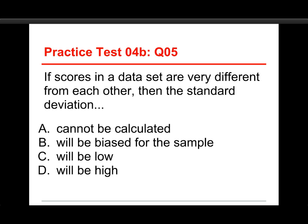Number five: if scores in a data set are very different from each other, then the standard deviation will be: A, cannot be calculated; B, biased for the sample; C, low; or D, high. The answer is it will be high. When scores are very different and there's a lot of spread, the standard deviation — which is essentially an average of how far everything is from the mean — will be a big average. If they were very close, the standard deviation would be very low. The idea that it would be biased if they're very different is not the case, and of course you can calculate it when they're different. That is the second practice test for Chapter 4 — we'll see you for the third one.